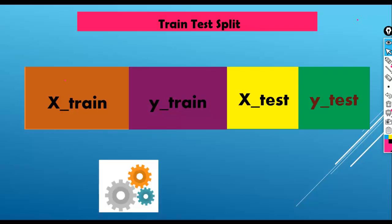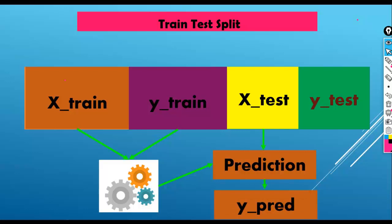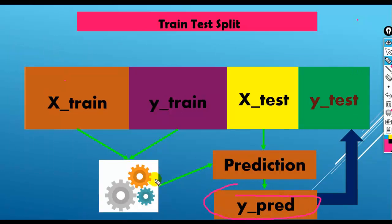We are going to train our machine learning algorithms on X_train and Y_train — our training set. We will perform predictions using X_test, our unseen samples kept aside for testing purpose. We will compare our predicted results, stored in Y_pred, with Y_test. At the end we are comparing our predicted results with the actual results stored inside Y_test.